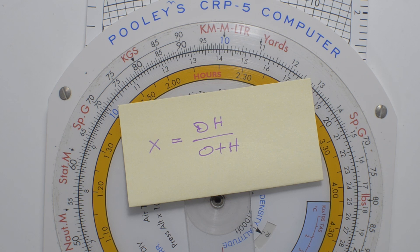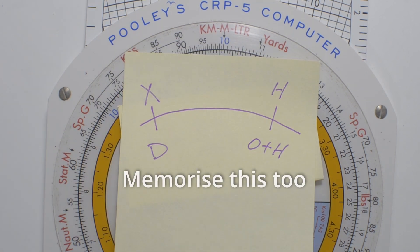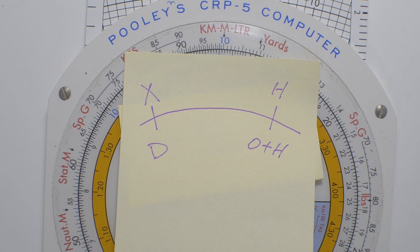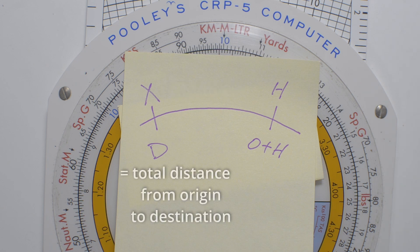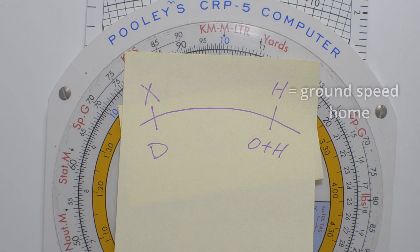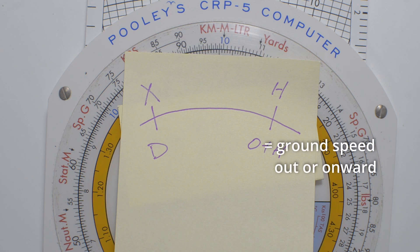So instead of the formula, we will be memorizing and applying a little schematic, where X represents the unknown value, the distance to our critical point. D represents the total distance between our departure airport and our destination. H represents the ground speed home, and the letter O represents the ground speed out.